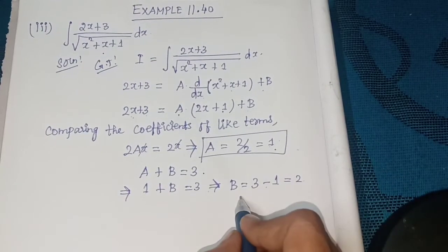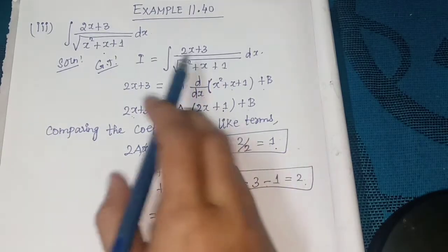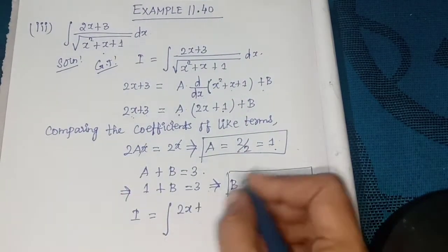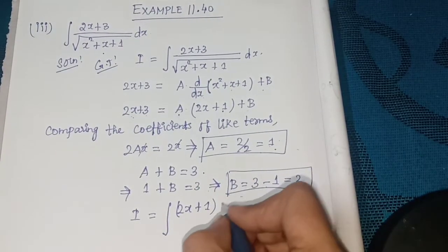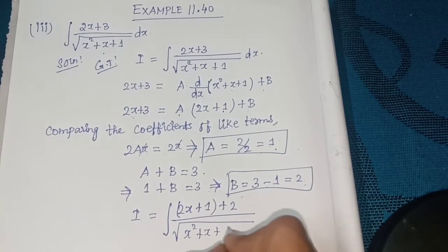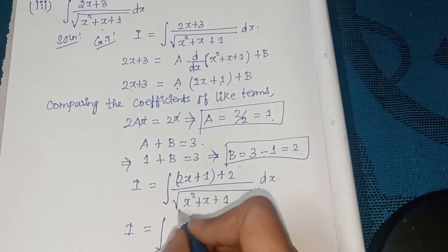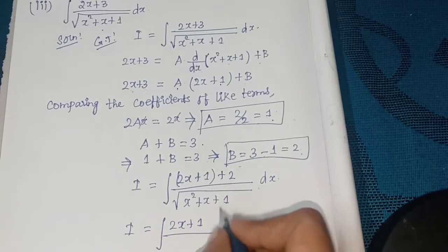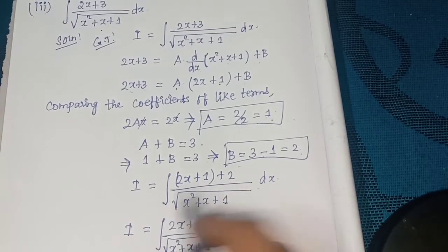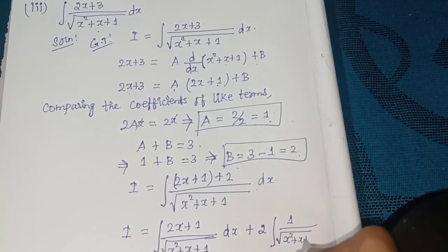So b = 2. Therefore I equals the integral of (2x + 1 + 2) divided by square root of (x² + x + 1) dx, substituting a = 1 and b = 2 to get (2x + 1 + 2) in the numerator.